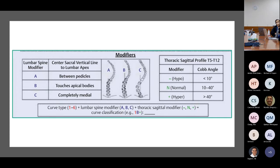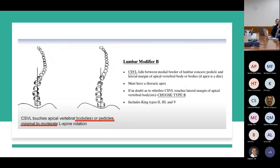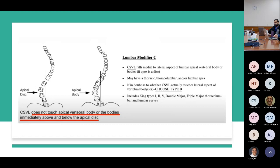Lenke then added modifiers. The lumbar modifier A is the central sacral vertical line ending between the pedicles of the stable vertebra with no to minimal scoliosis and rotation. Modifiers B and C are related to the apical vertebra: in modifier B, the central sacral vertical line just touches the apical vertebra body or pedicles; in modifier C, the apical vertebra is far out of the field and does not touch the central sacral vertical line at all. He also added sagittal profile modifiers.